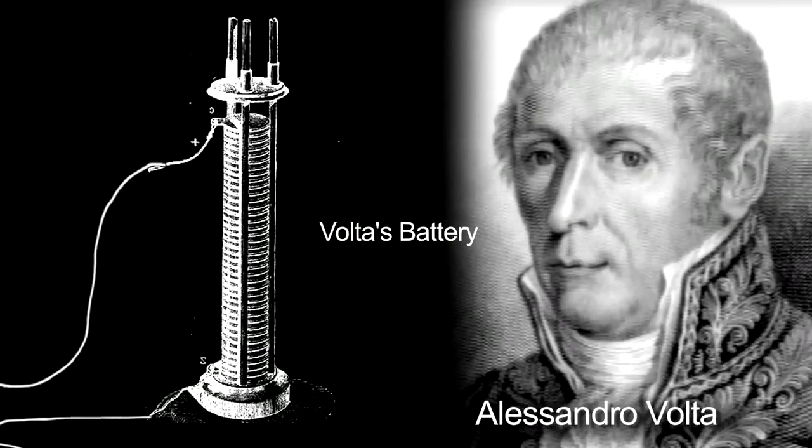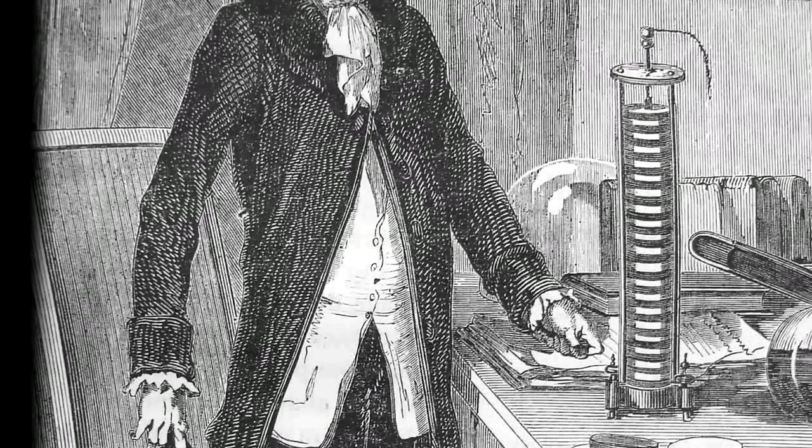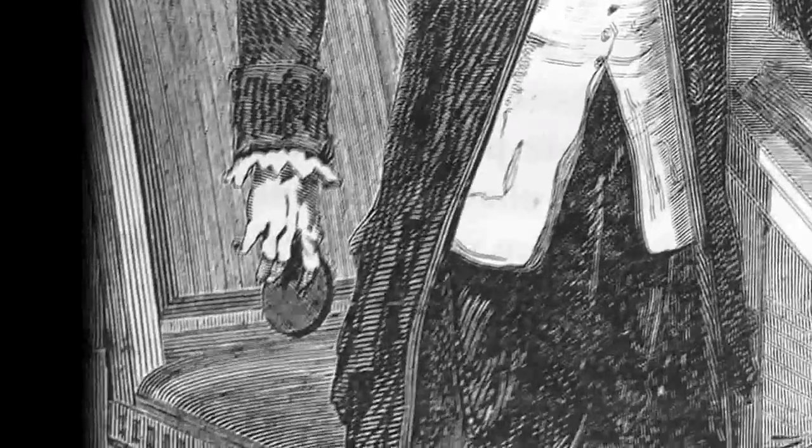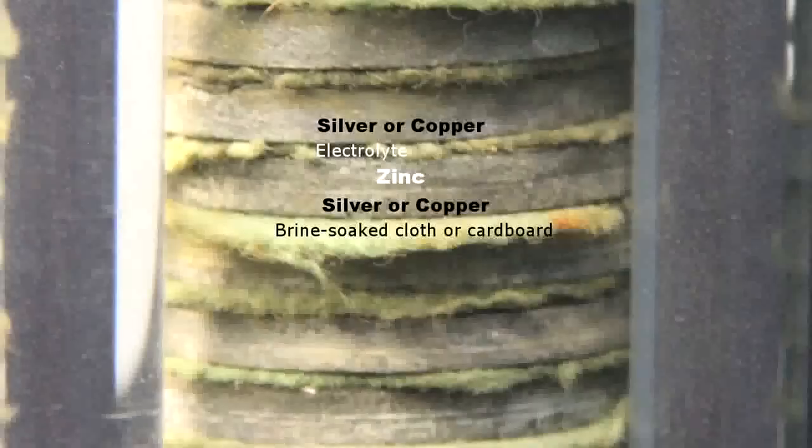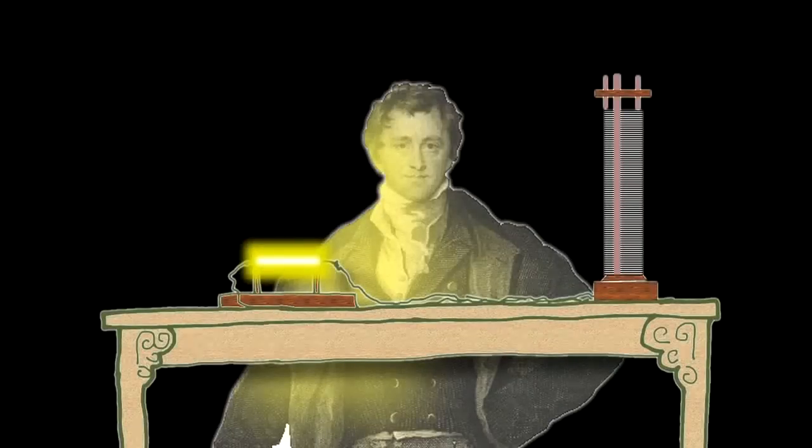Early electrical pioneer Alessandro Volta could increase the power of his battery by physically adding more zinc and brine discs for different experiments that required more power. But how could we precisely measure electricity for better experimentation?